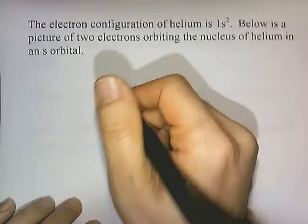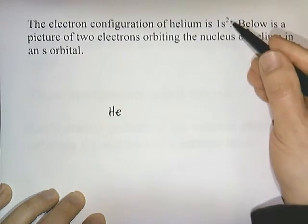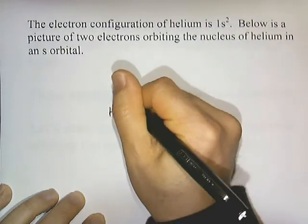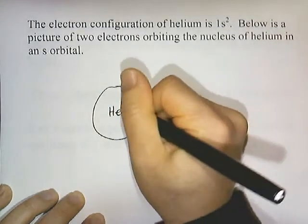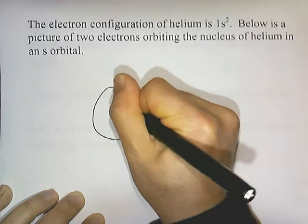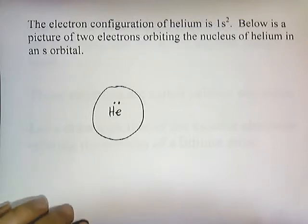The electron configuration of helium is 1s2. Below is a picture of two electrons orbiting the nucleus of helium in an S orbital. The symbol for helium is He, and these two electrons are in the S orbital, which is shaped like a sphere. Two electrons are two dots, so I'll put the two dots like that. There's our picture of two electrons zipping around in the S orbital in a helium atom.